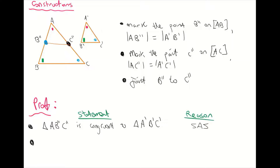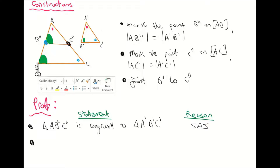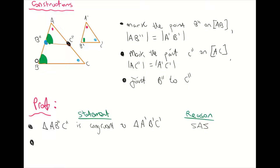Now we're going to look at some angles. We know that angle a b double dash c double dash is equal in size to angle ABC. Those two angles are equal because they are corresponding angles. We can now say that the line BC is parallel to the line b double dash c double dash, because those two lines are parallel since we fit that small triangle into the larger triangle.